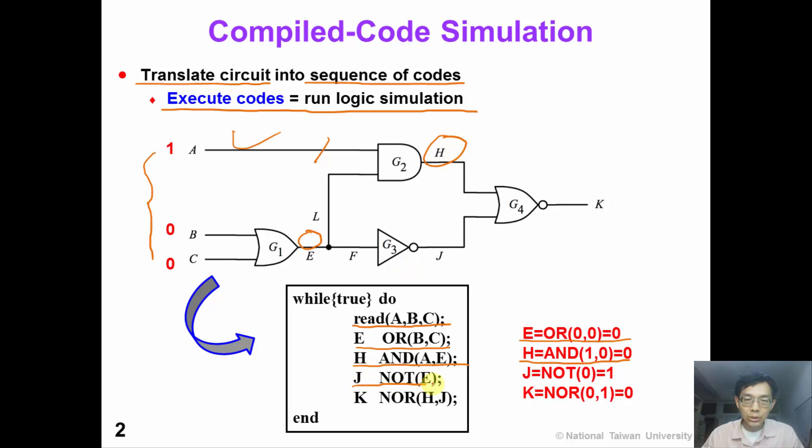Similarly, we execute the next line of code. So J is 1. Finally, K is 0. So we obtain the final result, which is 0. And in this way we can finish the logic simulation.